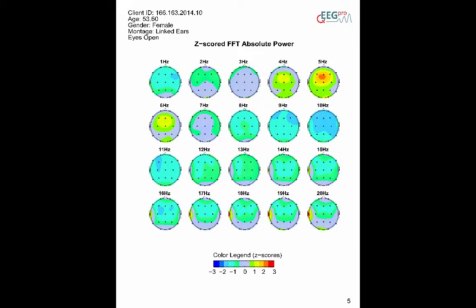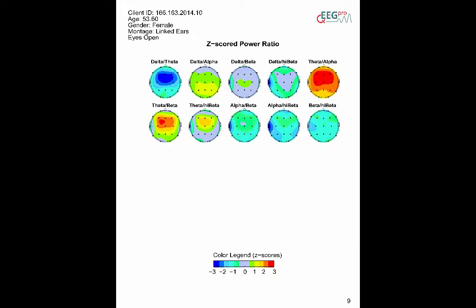For the z-scores, the plots are scaled between -3 and +3 z-scores. The power ratio analysis shows the z-scores for the most common power ratios.